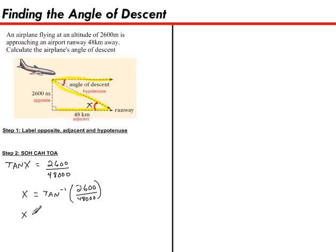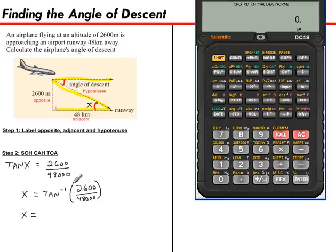Now I can enter what I see there into my scientific calculator. Let's bring that in now. Now I'm looking for the inverse tan button. Usually you can find it as a second function right above your tan button. So to access it, I'll hit shift on mine. Then tan. Then I enter in brackets the fraction that I'm given. 2600 divided by 48,000. And then a closed bracket. Then enter. And here is my answer. X is 3.1 degrees.